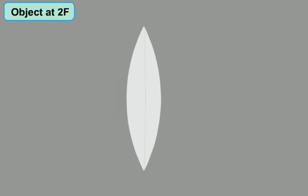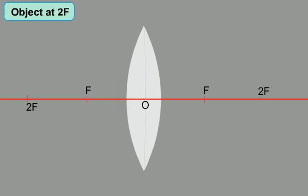Now let us look at another example — when the object is at 2F. First consider a lens, then draw a principal axis. Now locate the principal focus and 2F on both sides of the lens. Then draw the object AB at 2F. Now draw a line parallel to the principal axis and touching the head of the object AB; the line after refraction passes through the focus F on the other side of the lens.